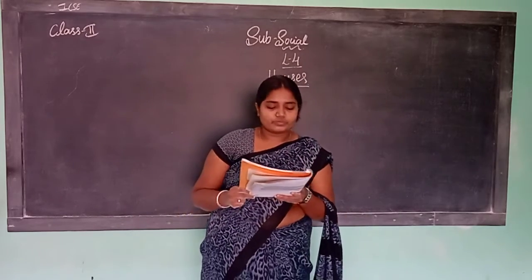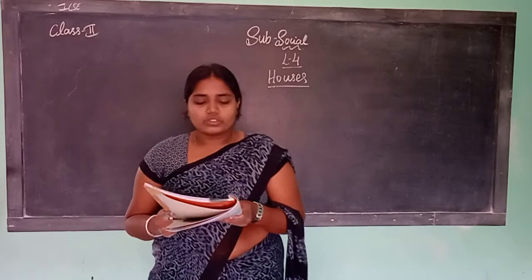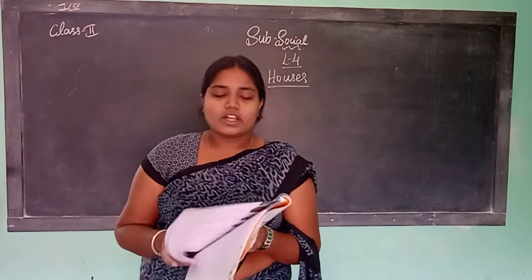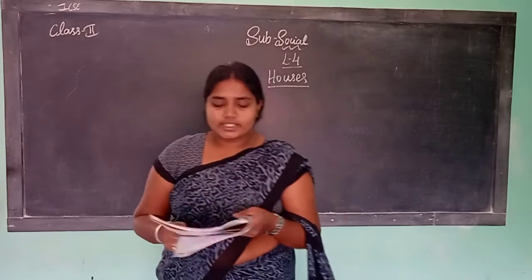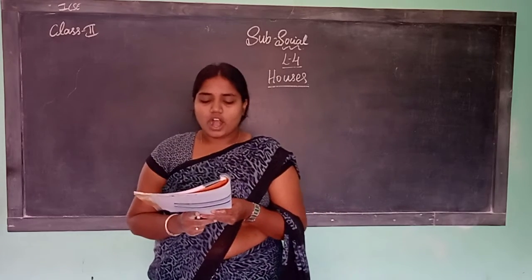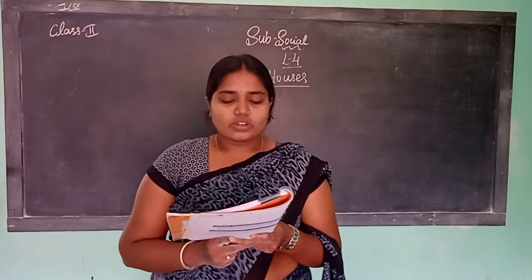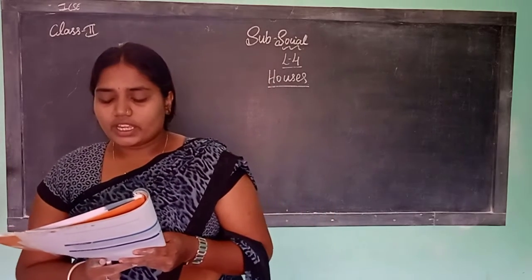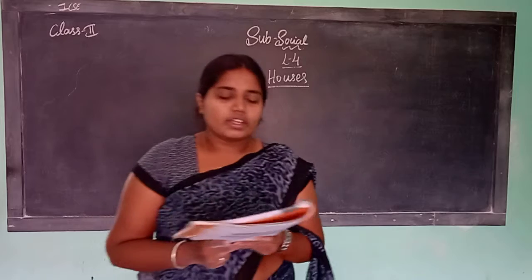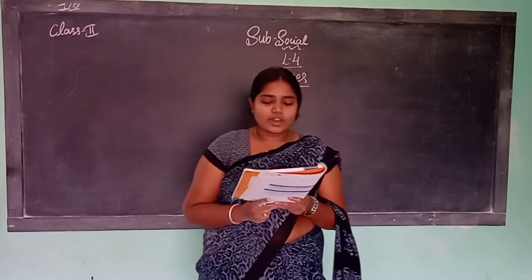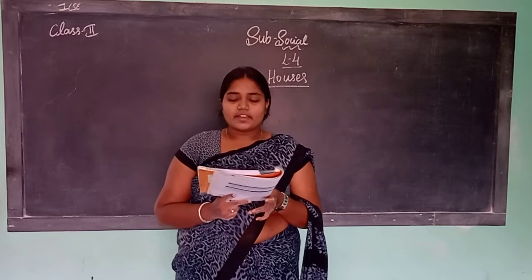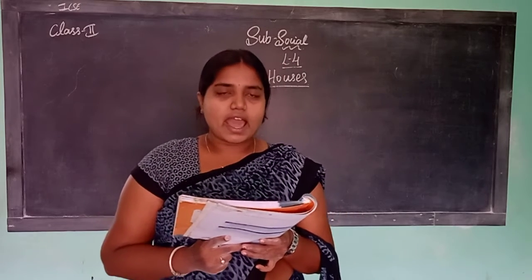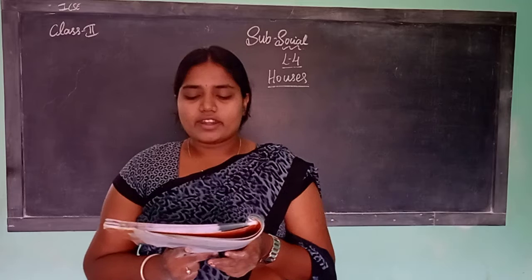Time to know. Lesson number 4. We need a house. Listen children, I will read the full lesson. Lesson number 4 — Houses. We need a house to live with our family. A place where we live with our family is called a home. A house protects us from thieves, cold, rain, winds and storms. It protects us from enemies like wild animals, thieves and robbers.